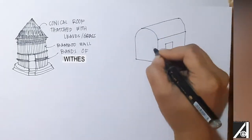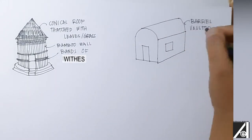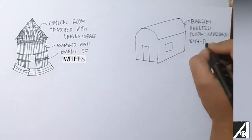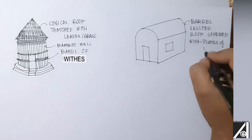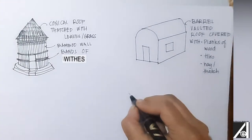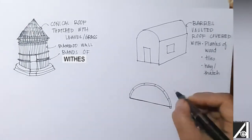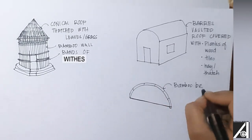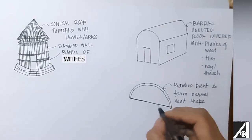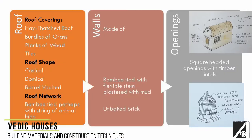The second type of house consisted of a rectangular platform topped by a barrel-vaulted roof form. This roof was covered with planks of wood, tiles, or hay. The barrel-vaulted form was possible because of the flexibility of bamboo — the bamboo was bent and a string of animal hide was used to retain the curved profile, upon which rafters were placed and then covered with the roofing material.